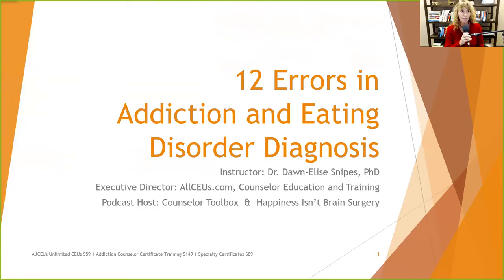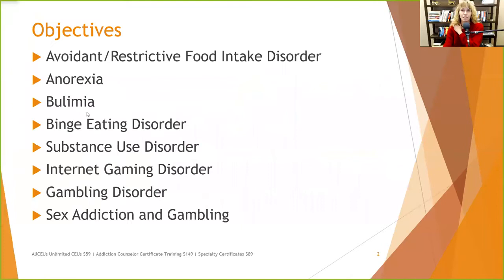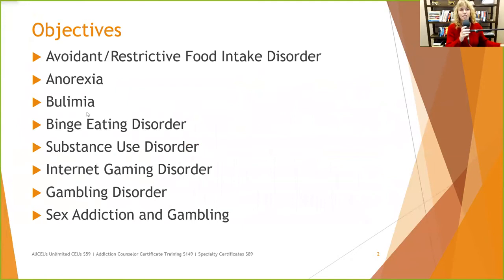Welcome to today's presentation. We're going to be talking about 12 errors in addiction and eating disorder diagnosis and treatment — and obviously there's probably a lot more than 12, but we're only going to cover 12 today. We'll briefly review avoidant restrictive food intake disorder, anorexia, bulimia, binge eating disorder, substance use disorder, internet gaming disorder, gambling disorder, and sex addiction. We're going to focus specifically on differential diagnosis and some errors that might come up, because a lot of times people aren't familiar with diagnosing non-mood disorders.